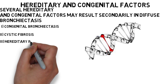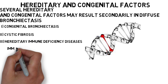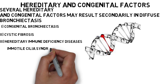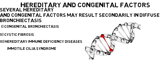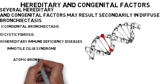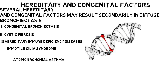Hereditary immune deficiency diseases are often associated with a high incidence of bronchiectasis. Immotile cilia syndrome, which includes Kartagener syndrome, is characterized by ultrastructural changes in the microtubules, causing immotility of the cilia of the respiratory tract epithelium, sperm and other cells. Males in this syndrome are often infertile. Atopic bronchial asthma patients may rarely develop diffuse bronchiectasis.